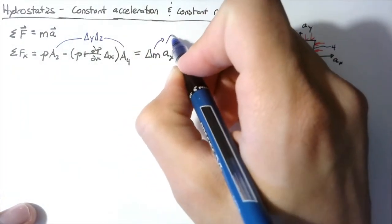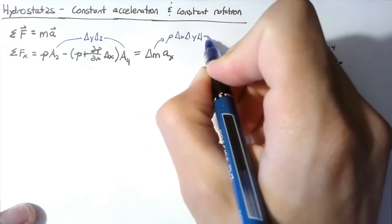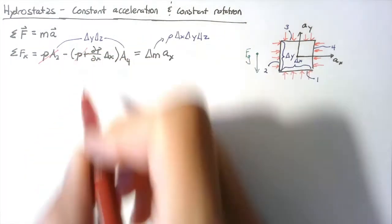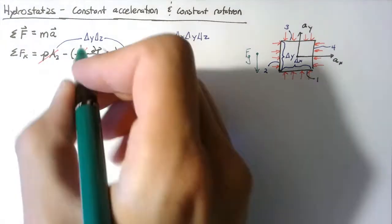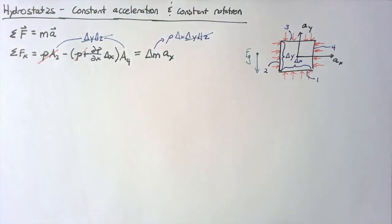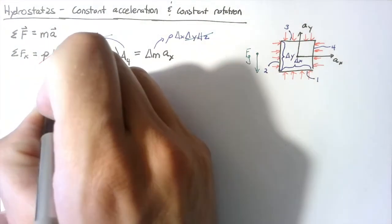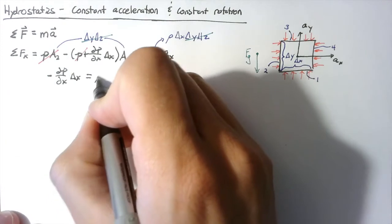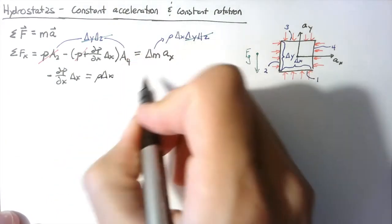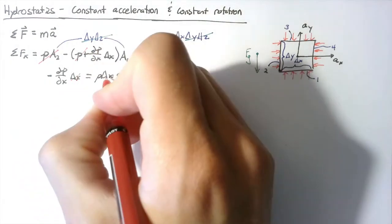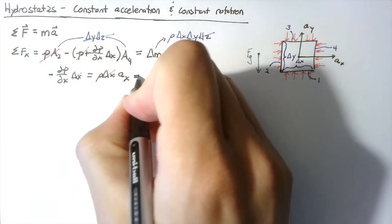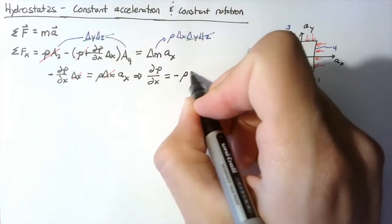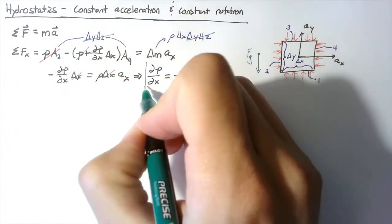Delta m is equal to our density multiplied by the volume of the box. We can get rid of the pressure terms for side two and side four, and also divide through by delta y delta z on both sides of the equation. Taking all those steps into account, we end up with negative dp/dx multiplied by delta x equal to rho delta x multiplied by the acceleration in the x direction. After dividing through by delta x and moving the negative to the right-hand side, we end up with dp/dx equal to negative rho times a_x.